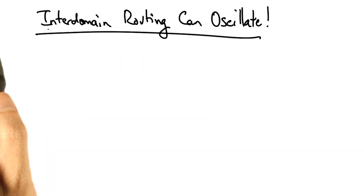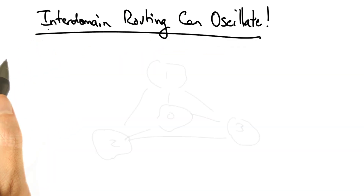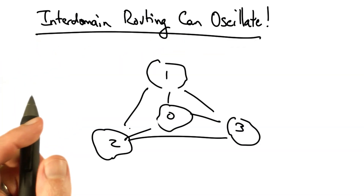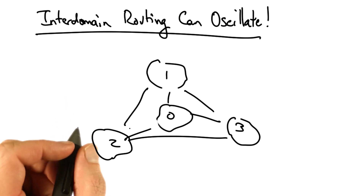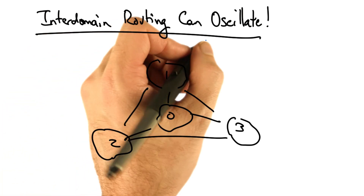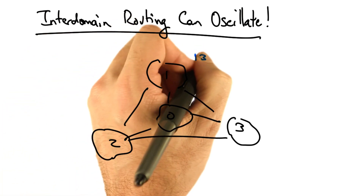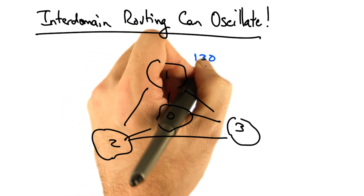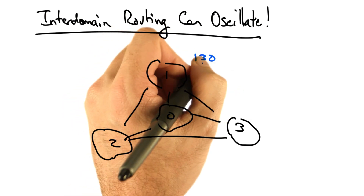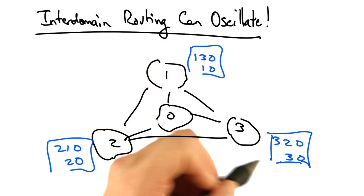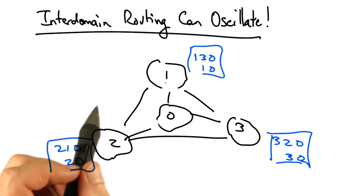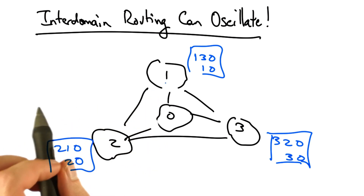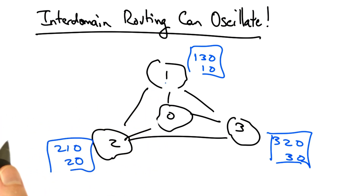In fact, interdomain routing can oscillate indefinitely. To see why, consider the following four AS topology, where each AS specifies preferred paths, presumably via local preference. So each AS prefers the AS in the clockwise direction, rather than the shorter direct path.